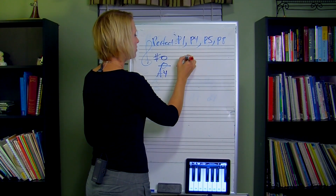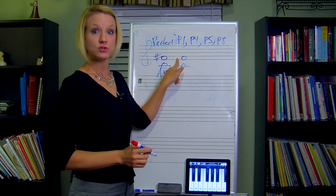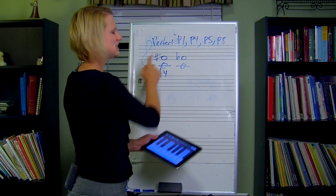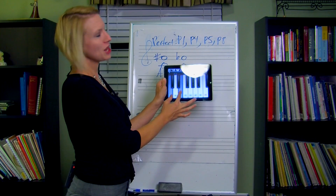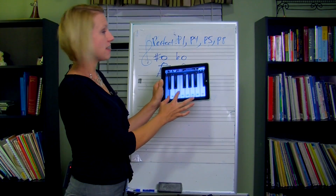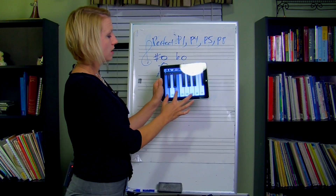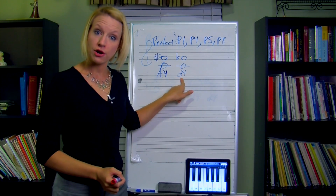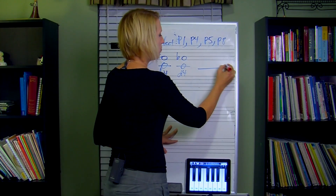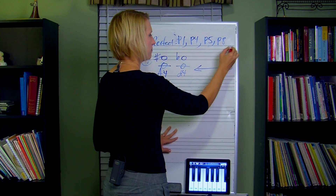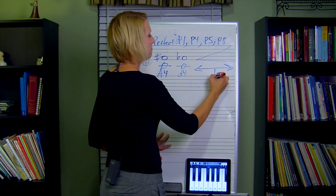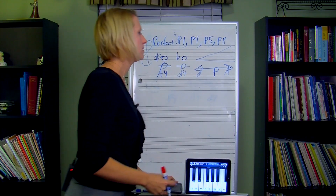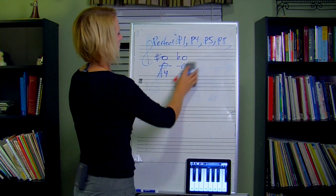On the other hand, what if the composer took that same fourth but put a flat on there instead? An F flat — enharmonically that's E, but it's written as F flat, so this is C to F flat. It's still a fourth. We're going to call that a diminished fourth. When it is a half step smaller than the perfect, it's called diminished. Think of it like a greater-than/less-than sign with perfect in the middle: augmented is greater than, diminished is less than.